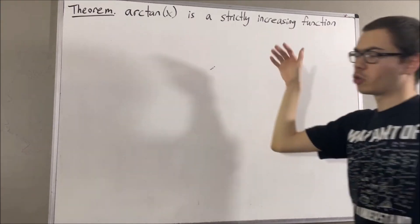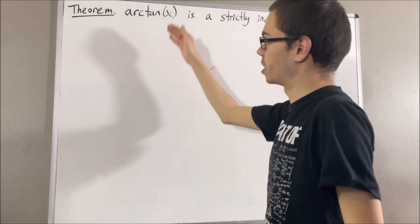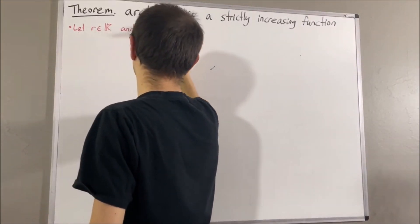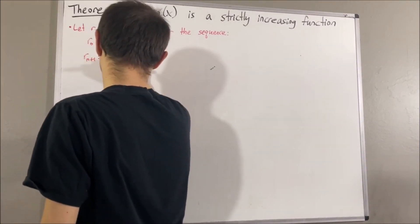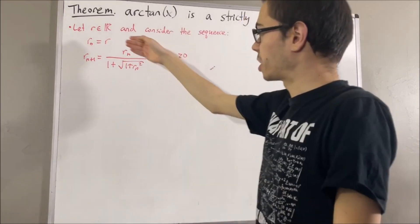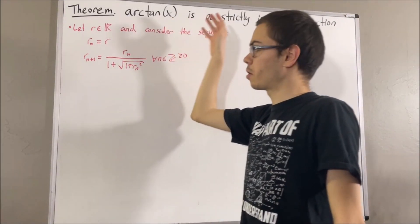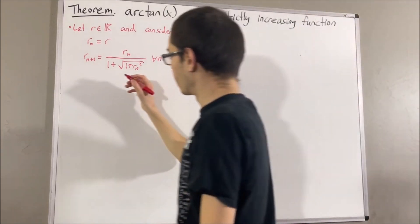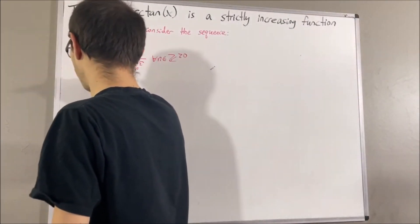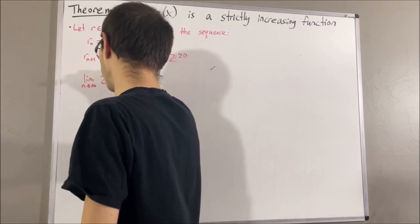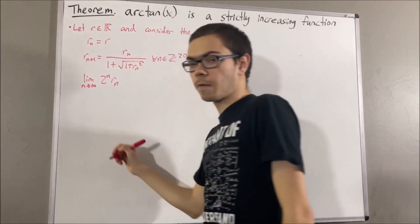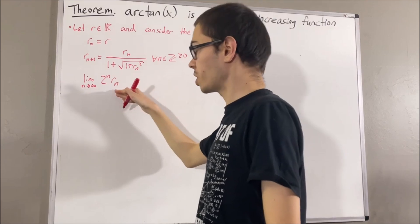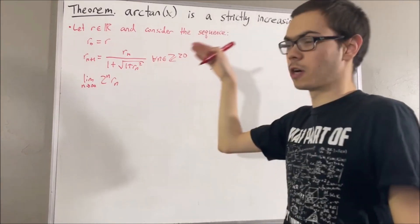First of all, let's remind ourselves of our definition of the arctangent function. Let r be any real number, and consider the following sequence. We have shown that the sequence 2 to the n times r_n converges, and we defined the value that this sequence converges to to be the arctangent of r.